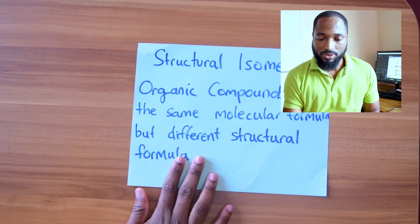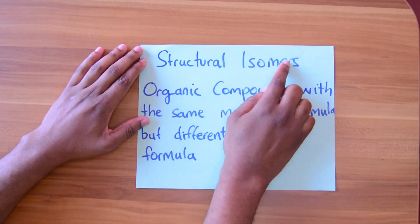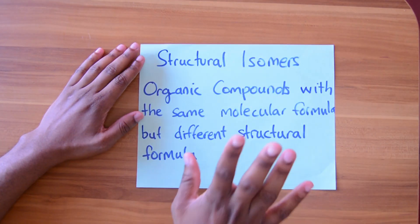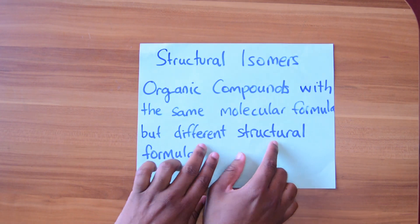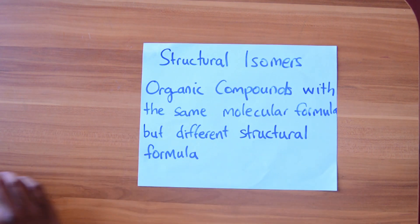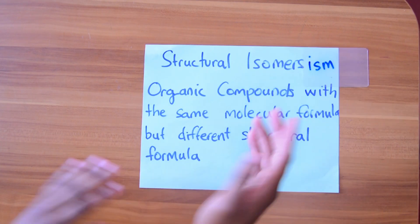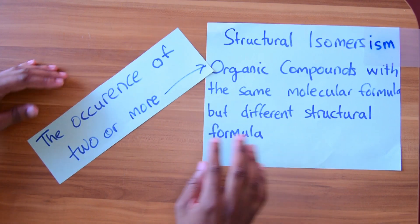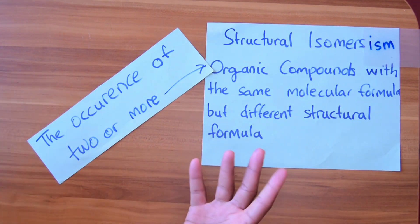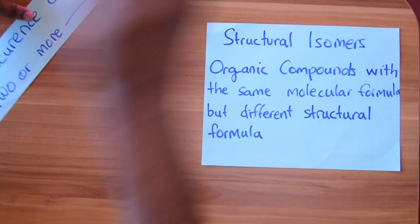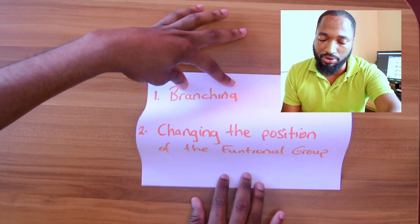The first thing you need to know is the definition of structural isomers. Now there are other kinds of isomers, but for CXC all you need to know is structural isomers — not optical, stereoisomers, or CISTRANS. The definition is: organic compounds with the same molecular formula but different structural formula. That's the key — same molecular formula, different structural formula. The definition of structural isomerism is: the occurrence of two or more organic compounds with the same molecular formula but different structural formulae.